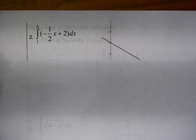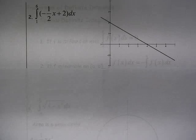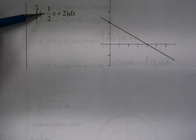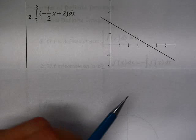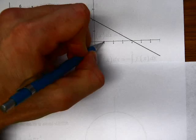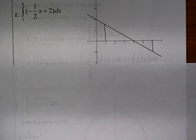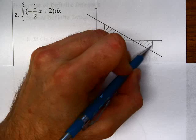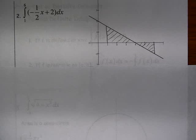We can do the same thing on the next page here. We have the definite integral from 1 to 6 of this function negative 1 half x plus 2. All right, so we're going to sketch that. I have negative 1 half x plus 2 already graphed here. So we're going to go from x equals 1 to x equals 6. So we're going to calculate this area.